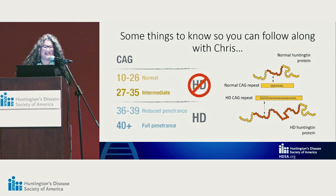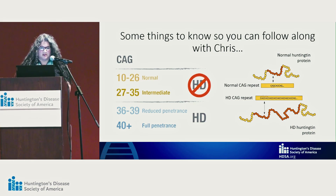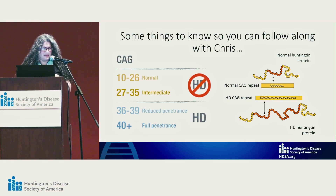Then there's the stuff in the middle. 27 to 35 repeats — when doing genetic counseling, most of the time we don't see people having disease with this range of CAG repeats, but we do worry about their descendants. There are a couple of case reports that make things more interesting. And then there's reduced penetrance, which is between 36 and 39 repeats. These folks tend to show up in our clinic a little bit later and seem to have a slower progression. We worry about their descendants inheriting a bigger number.